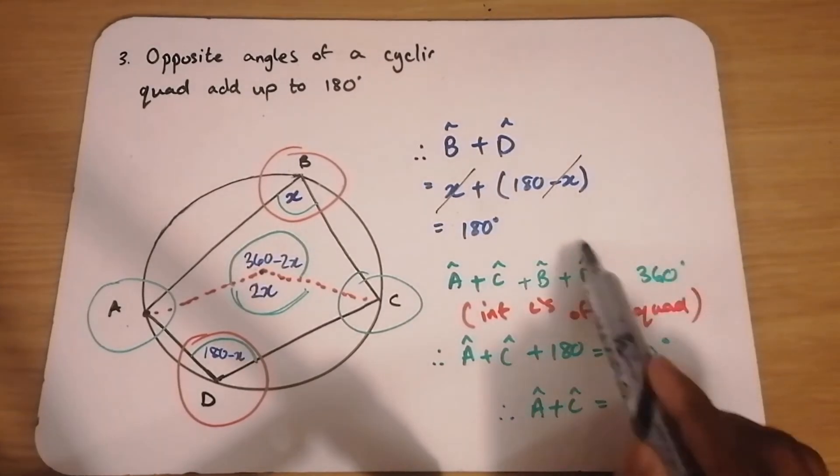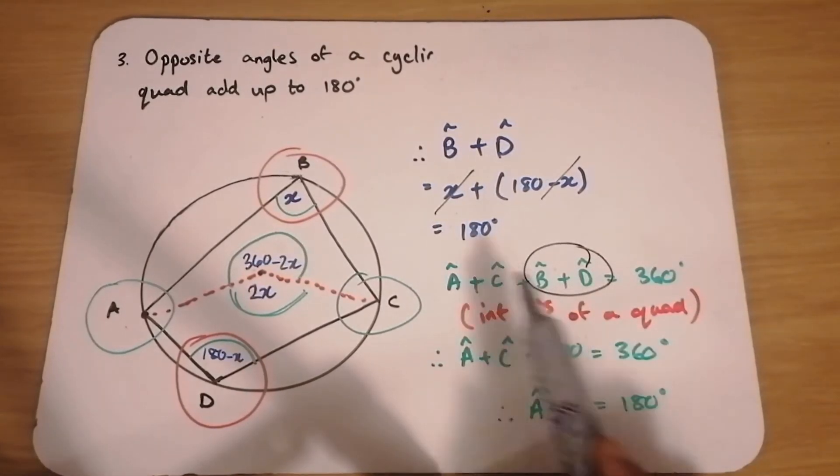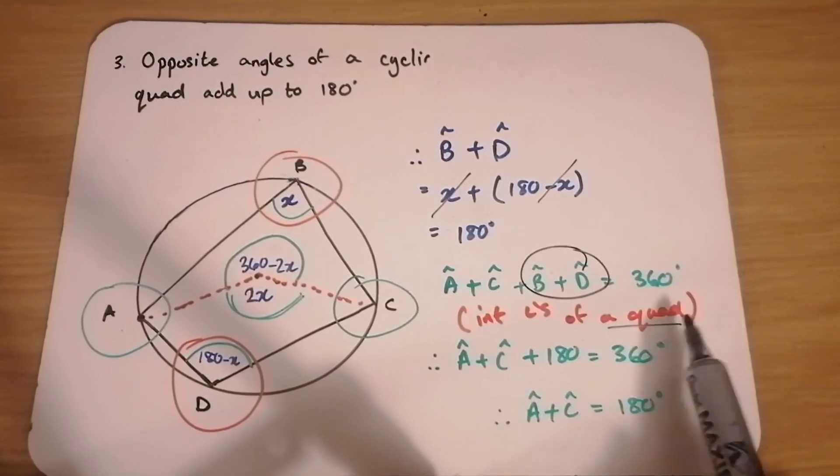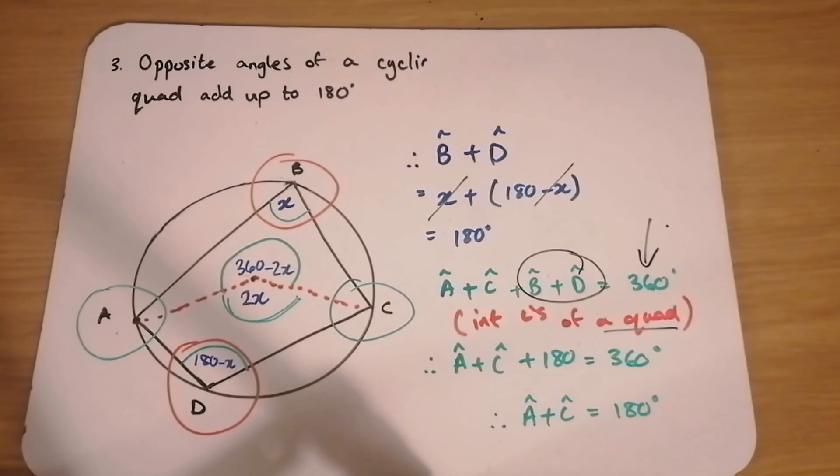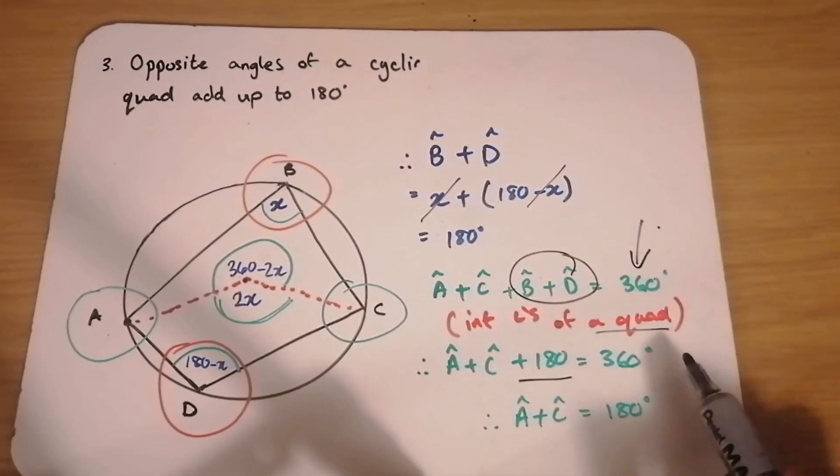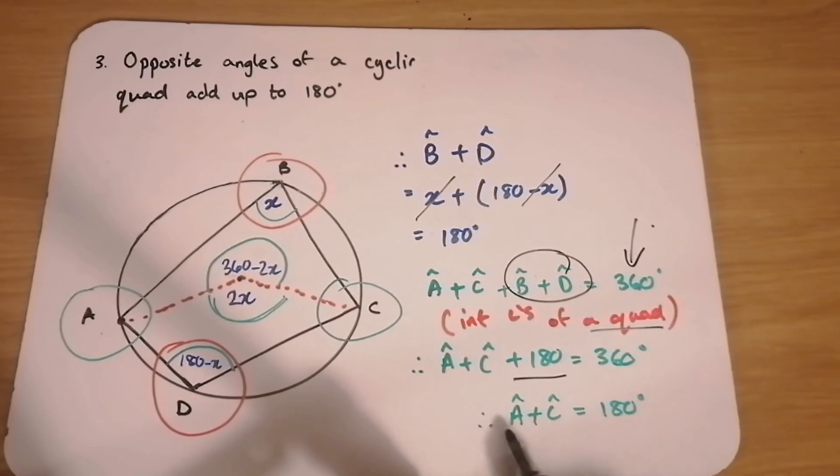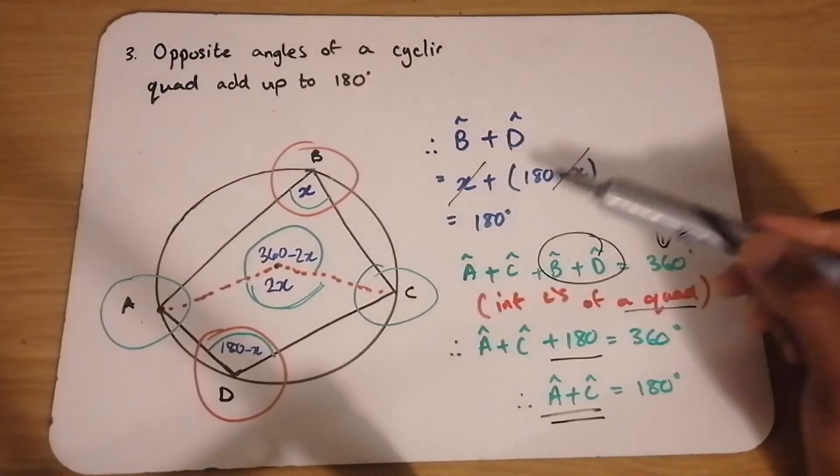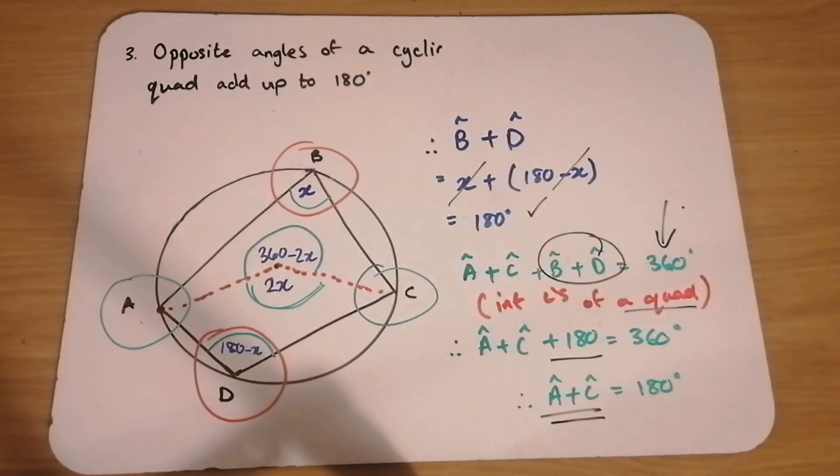Then also, once we know these two add up to 180, because all of them together, because they are interior angles of a quad, they should add up to 360 degrees. We already know this is 180. So if you minus 180 from the 360, you get that A plus C is also 180. So we proved that pair equal to 180 and this pair of opposite angles equal to 180. And there's your proof.